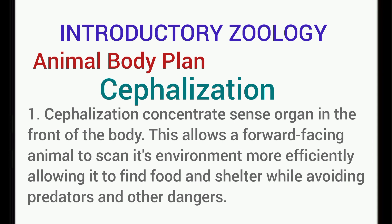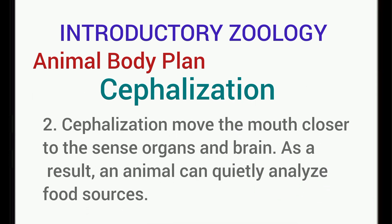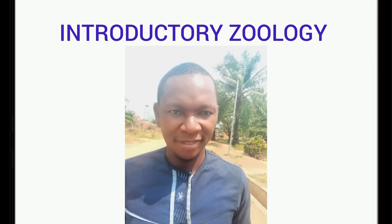Cephalization moves the mouth closer to the sense organs and brain. As a result, an animal can quickly analyze food sources, giving them the advantage of getting food and ensuring survival. This is the end of this part of the introductory zoology class. In my next class, I'll be giving more details on the Protozoa sub-kingdom. Please like, comment, and subscribe to my YouTube channel if you find this helpful.